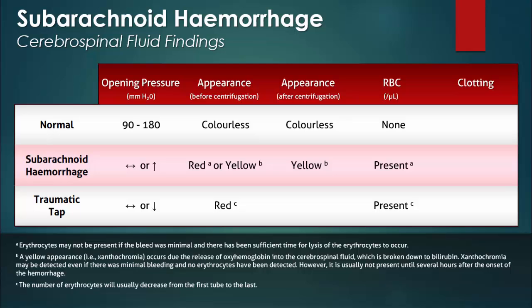With a subarachnoid hemorrhage, the red blood cell count is expected to be similar in each tube. Now while this is usually the case, the red blood cell count occasionally decreases in a sequential tube analysis. A traumatic tap can also be distinguished by the lack of xanthochromia on spectrophotometry.